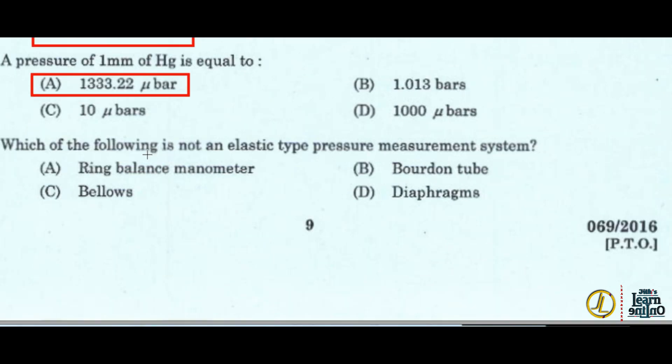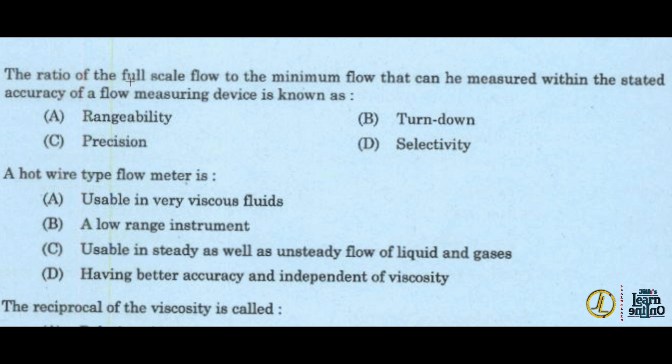Which of the following is not an elastic type pressure measurement system? Option A, ring balance manometer. The ratio of the full scale flow to the minimum flow that can be measured within the stated accuracy of a flow measuring device is known as turndown, option B.